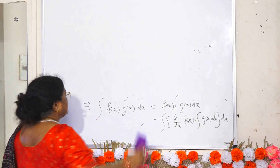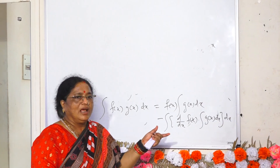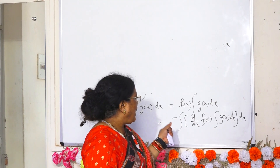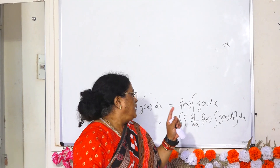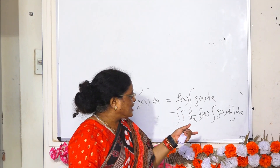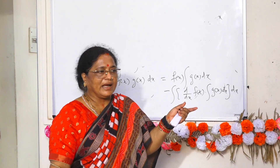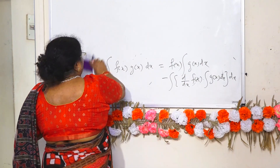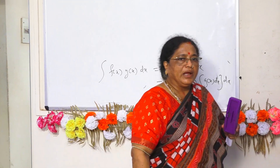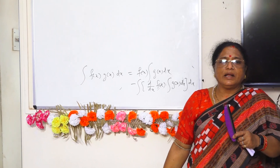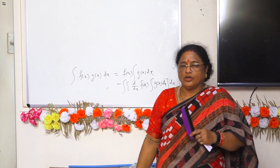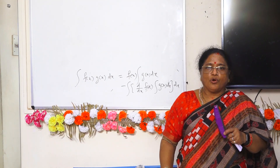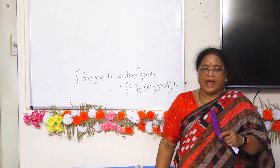That means the integral of the product of two functions equals the first function into integral of the second function, minus the integral of the product of the derivative of the first function into the integral of the second function. The choice of the first function is most important, so we have to choose it carefully.